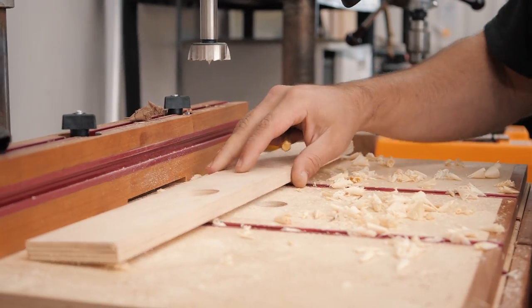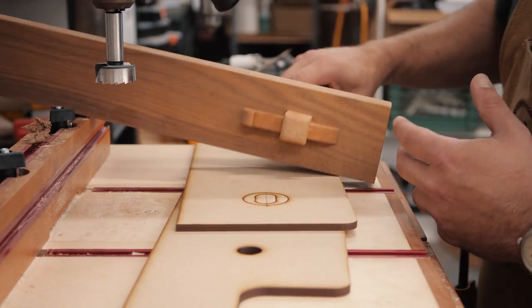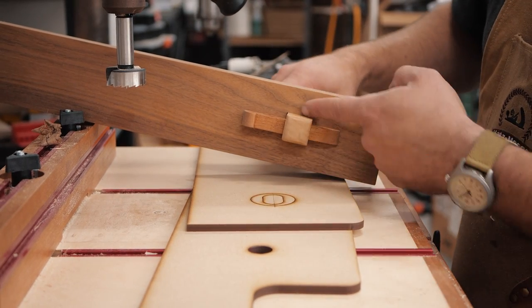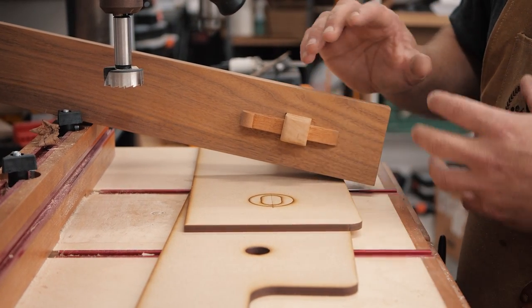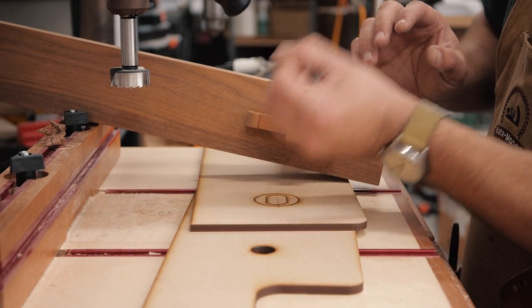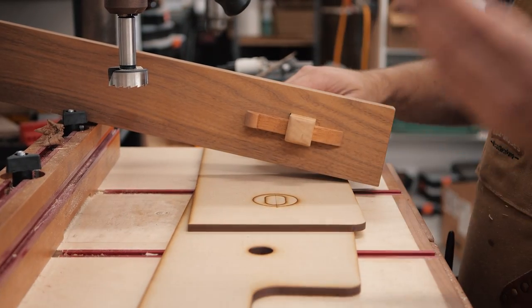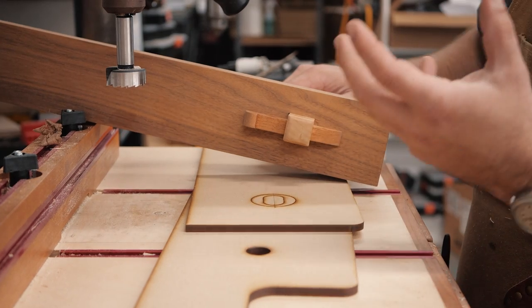What is a Forstner bit used for? My absolute favorite use for a Forstner bit is when you're making mortises for mortise and tenon. When you clear out that waste, you can find a Forstner bit that is just a teeny bit smaller than the square or rectangle that you're trying to cut and drill it out. And then it makes it really easy to clear with waste.